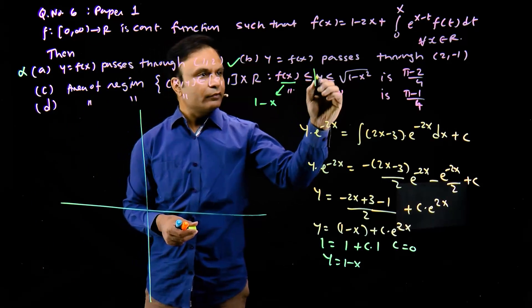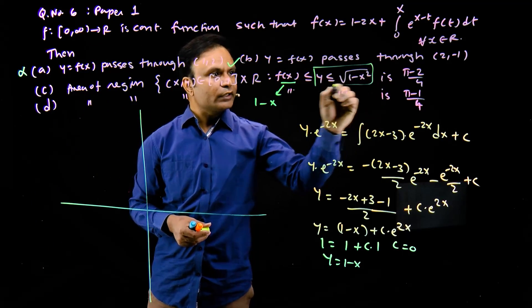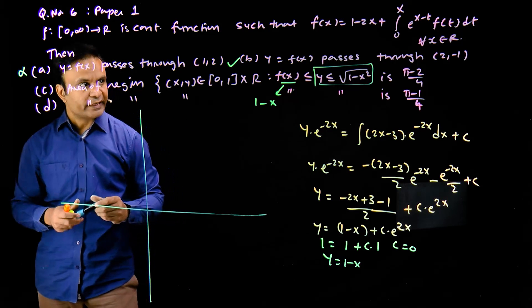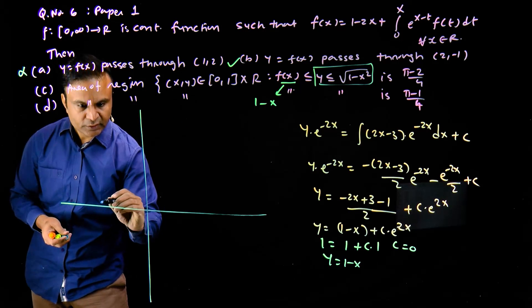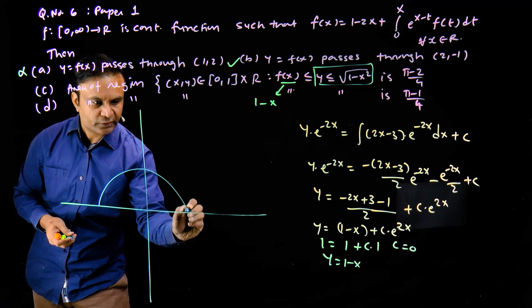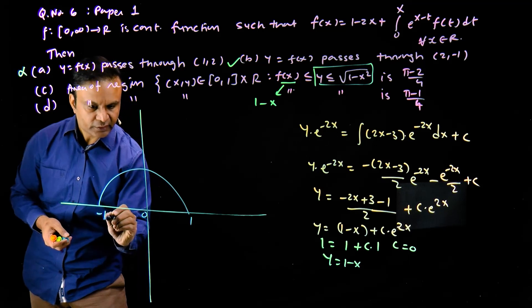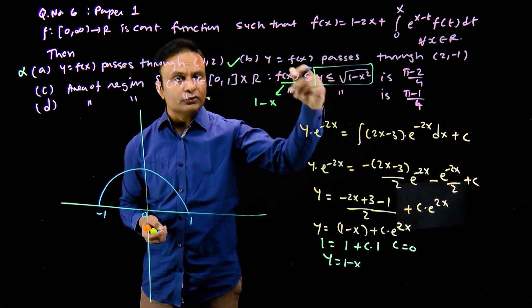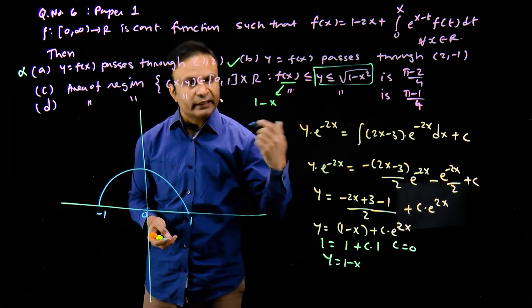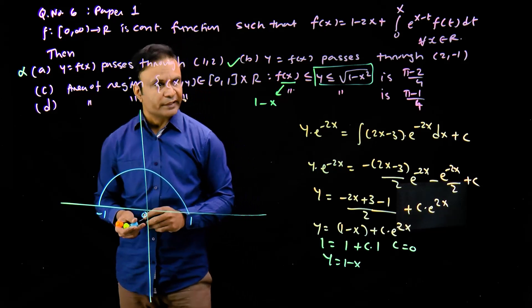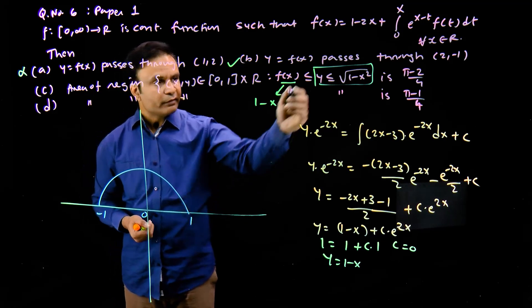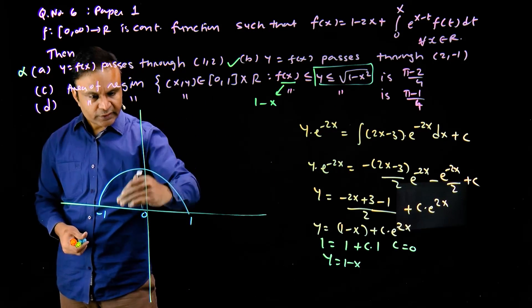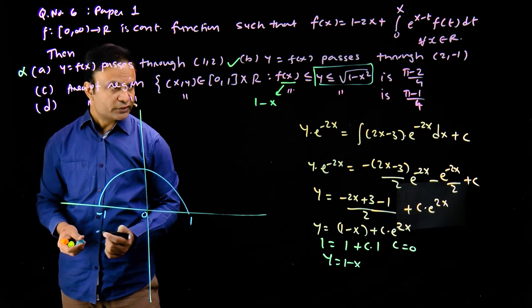Taking the equal sign in the upper bound √(1 - x²): squaring both sides gives x² + y² = 1, which is the part of the circle above the x-axis — center at origin, radius 1. The region y ≤ √(1 - x²) corresponds to the interior below this semicircle.